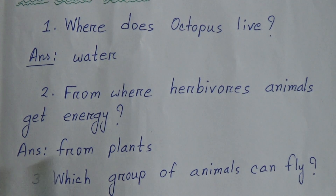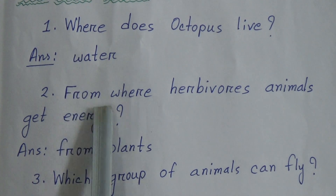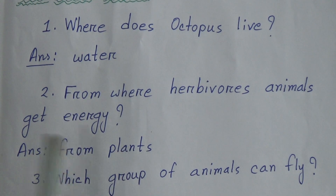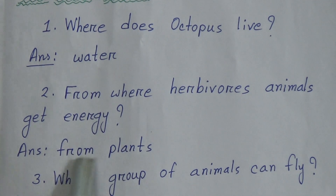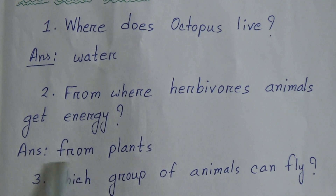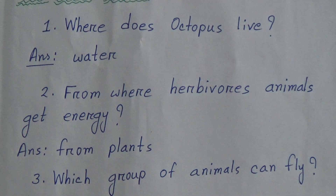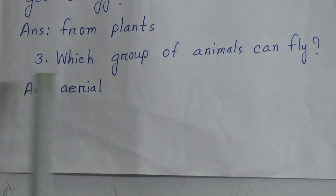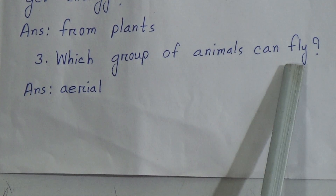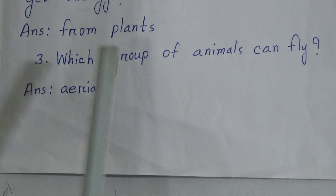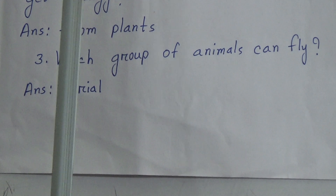Number two question: from where do herbivorous animals get energy? Answer is from plants. In your book it is written 'from plants and grass' — you can write both — but I have written 'from plants' because grass is also plants. Number three question: which group of animals can fly? Answer is Arial.